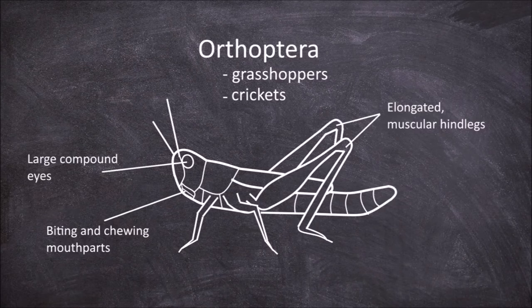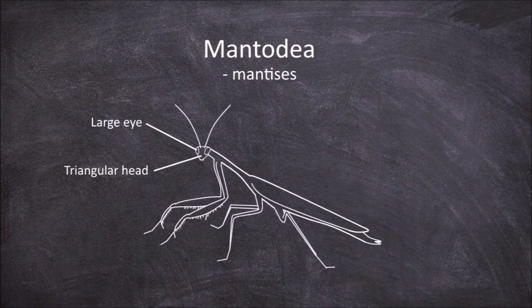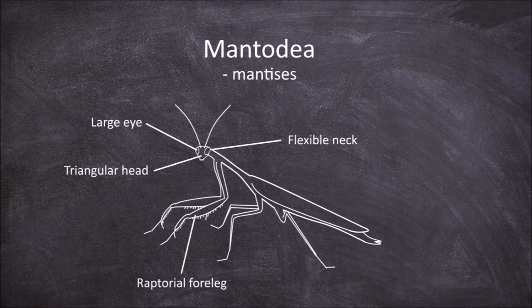The next order is the Mantodea, which are the mantises. Members of the Mantodea have triangular heads with large eyes and a flexible neck that allows the head to be swivelled. They also have enlarged raptorial forelegs specialized for grasping prey.